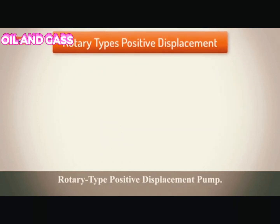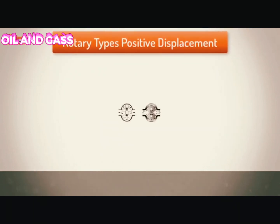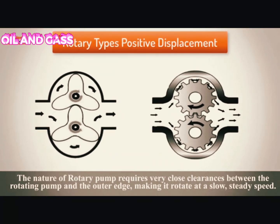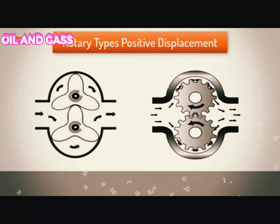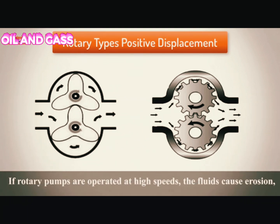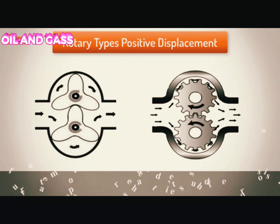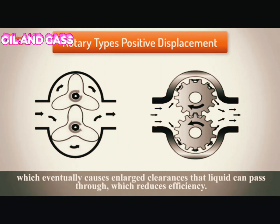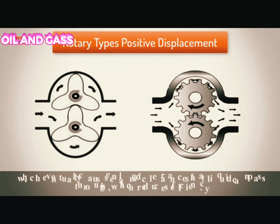Rotary type positive displacement. The nature of rotary pumps requires very close clearance between the rotating pump and the outer edge, making it rotate at a slow, steady speed. If rotary pumps are operated at high speeds, the fluids cause erosion, which eventually causes enlarged clearances that liquid can pass through, reducing efficiency.